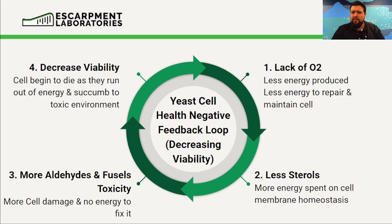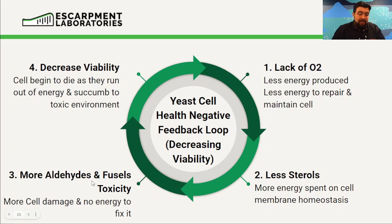We can see this feedback loop clearly: a lack of O2 produces less energy, and less energy is there to repair and maintain the cell. We'll see less sterols, which means the yeast cell will have to spend more energy to maintain itself — energy it doesn't have. Yeast cells can't go into energy debt; there's no energy bank they can borrow from. We'll have more aldehydes and fusel alcohols, which means more toxicity and more damage. This will all result in decreased viability. The yeast cells will begin to die as they run out of energy and succumb to the toxic environment.